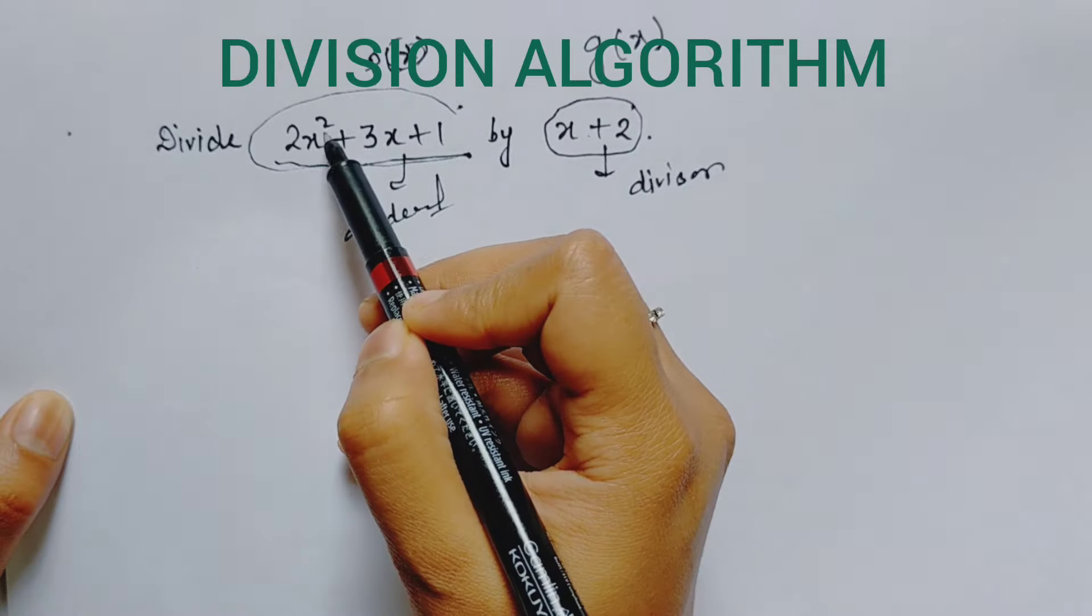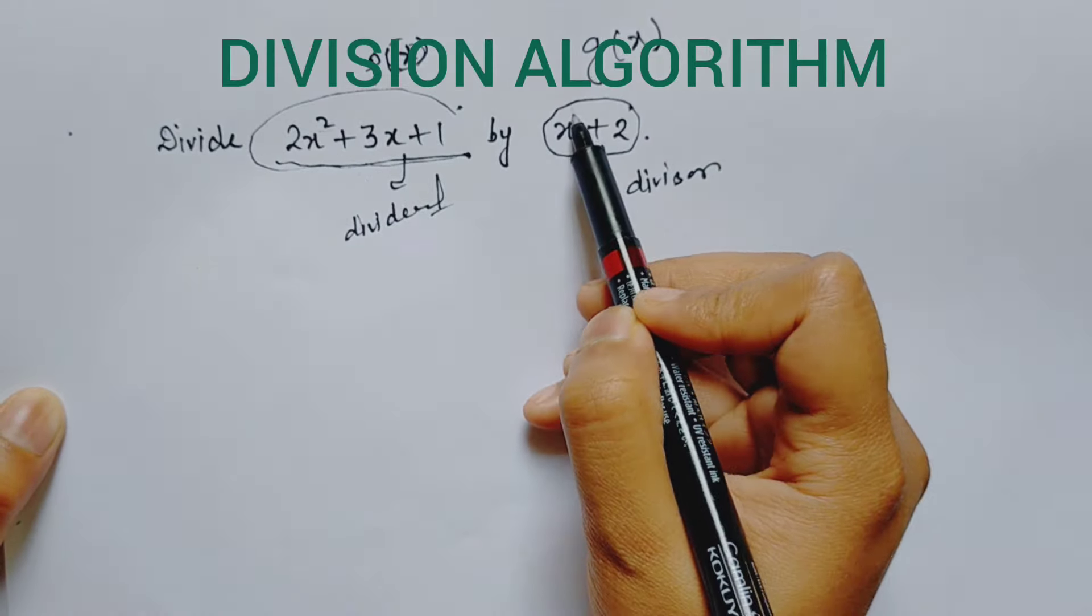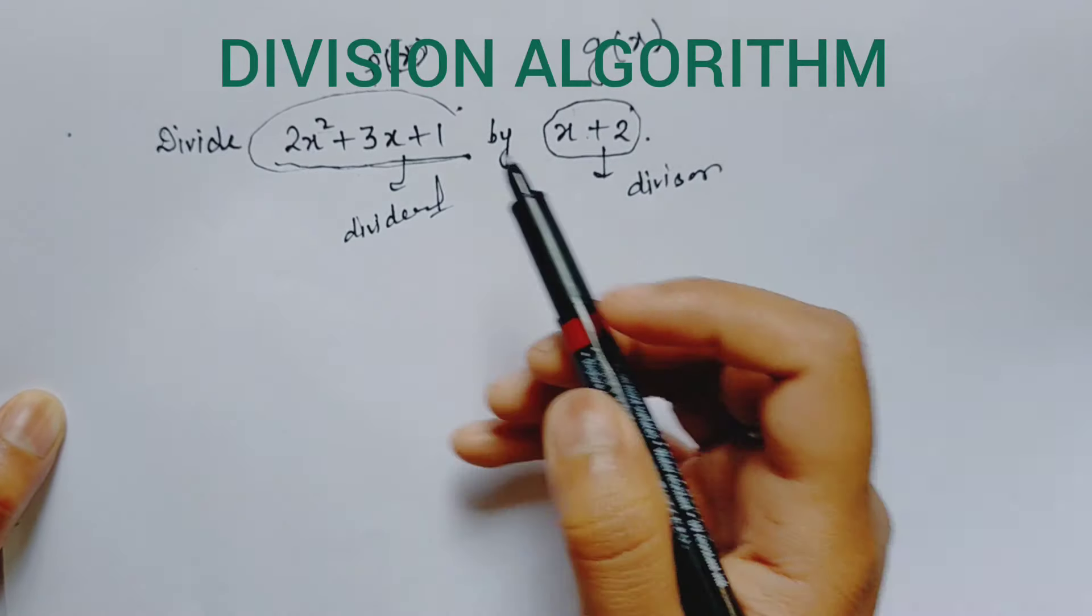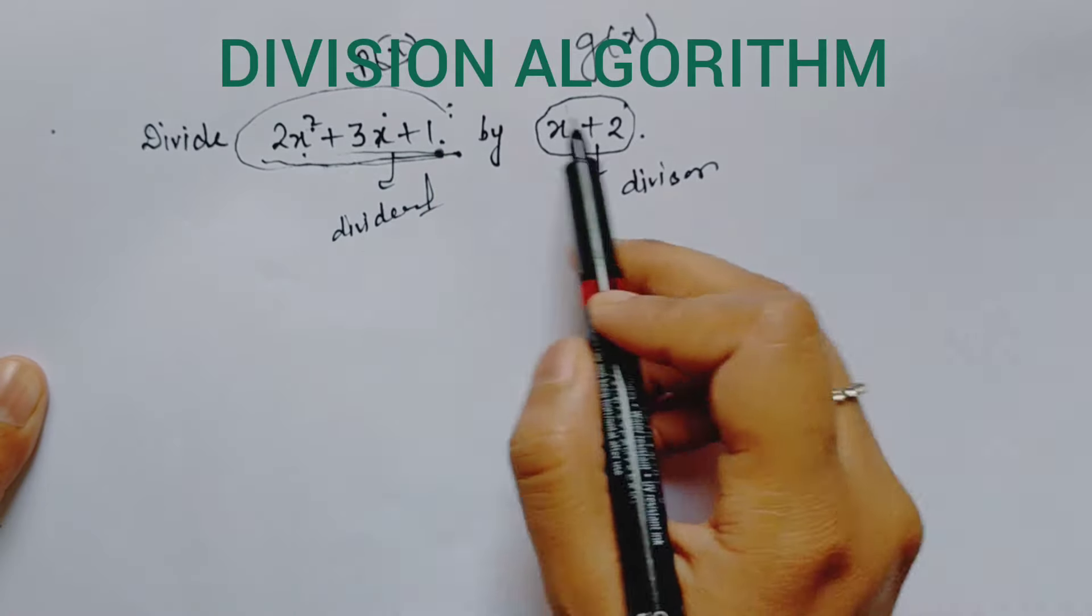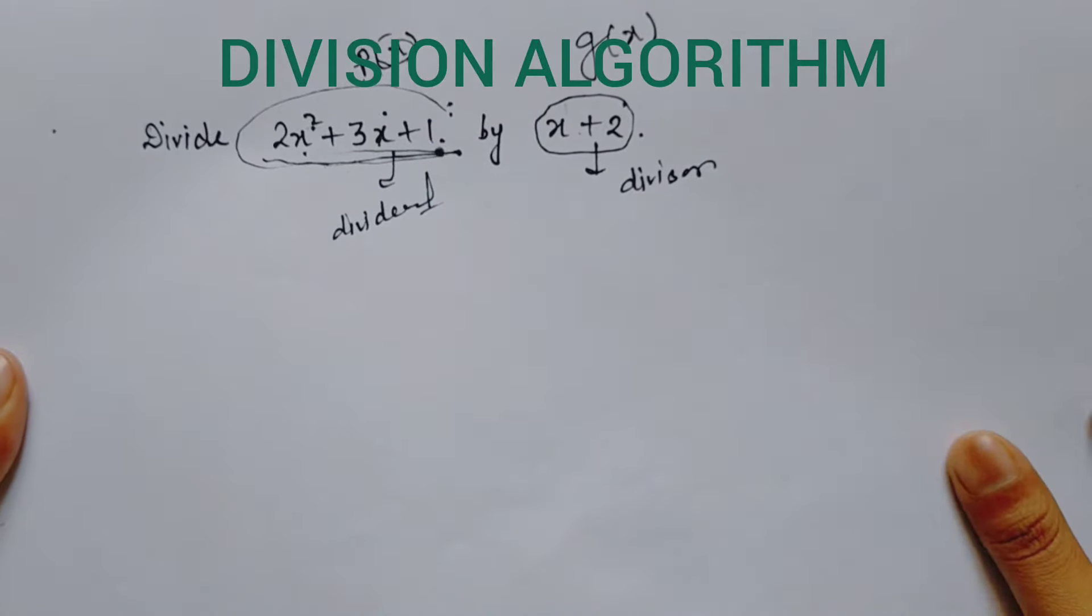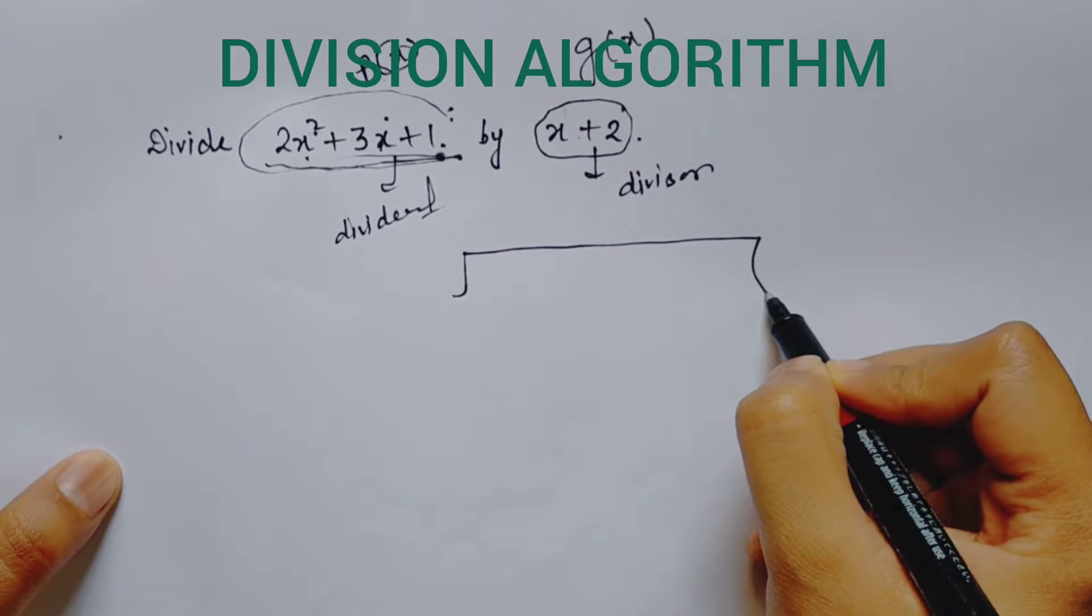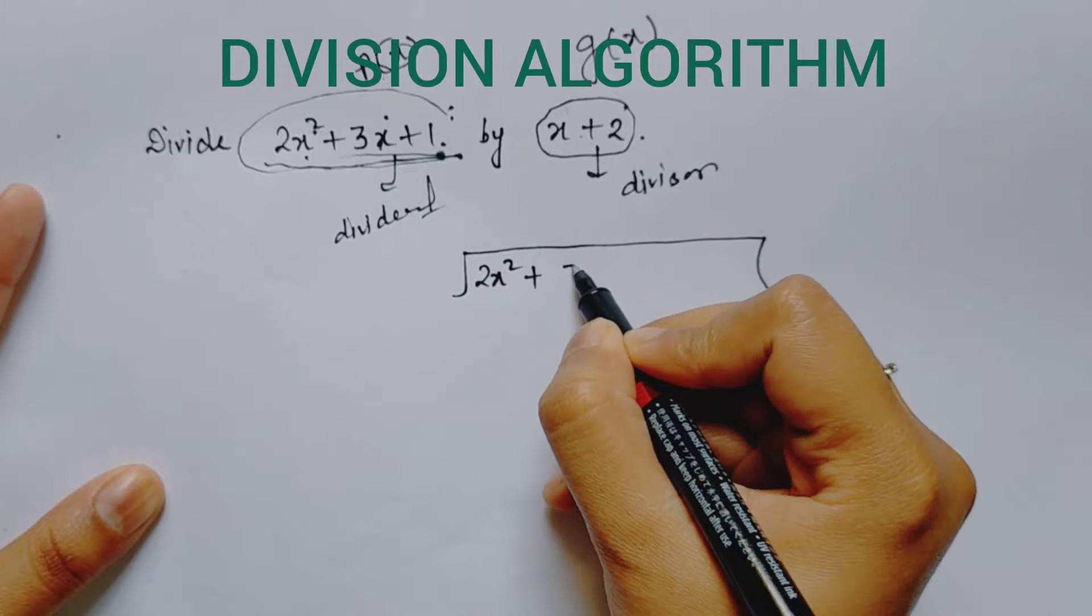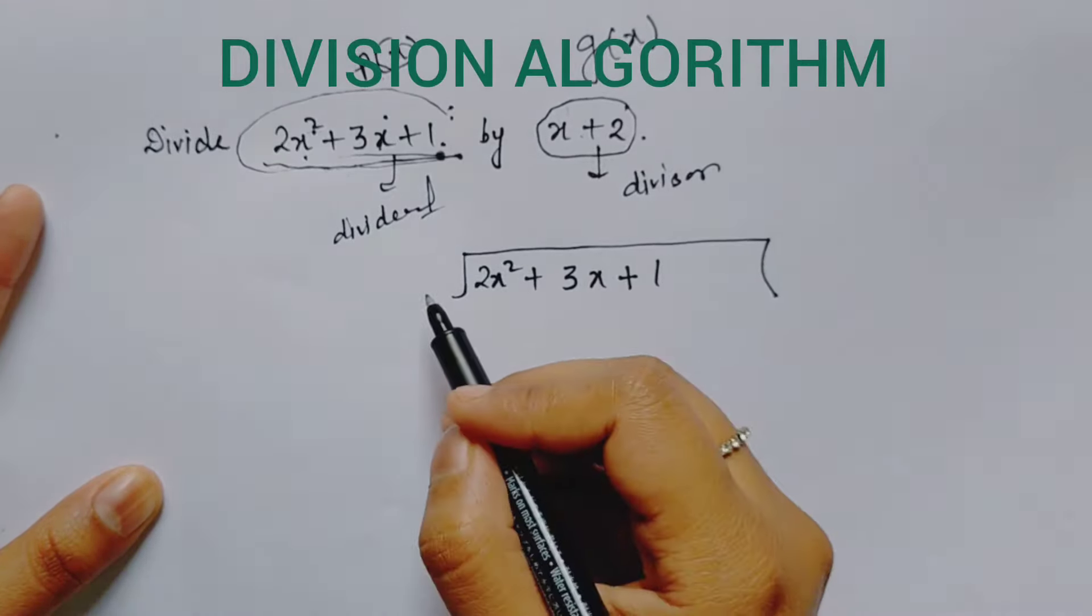The degree of this polynomial is 2 because the highest power is 2, and the degree of this polynomial is 1. Since 2 is greater than 1, we can divide this polynomial easily. Second, arrange them in standard form. Everything is already in standard form, so we will start the division.